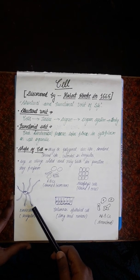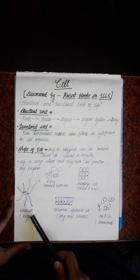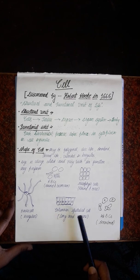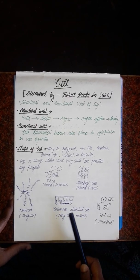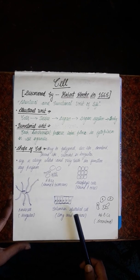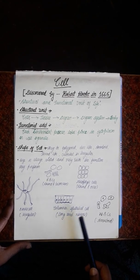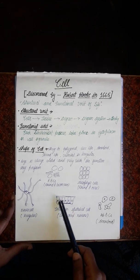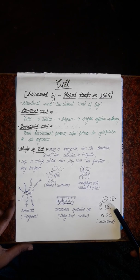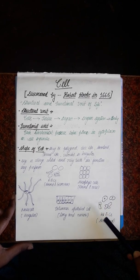Next is the nerve cell. Nerve cells are found in animal bodies and are irregular in shape — there is no particular shape for nerve cells. Next are columnar epithelial cells, found in the animal body as part of the epithelium. They are long and narrow in structure.